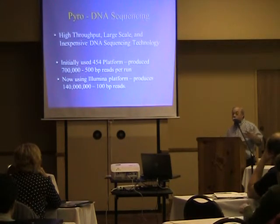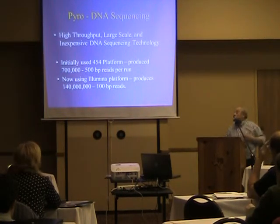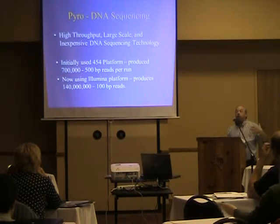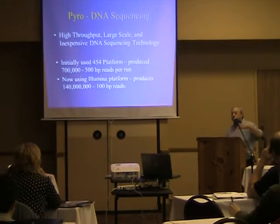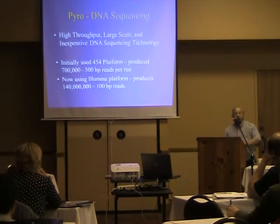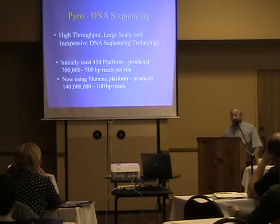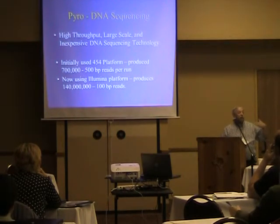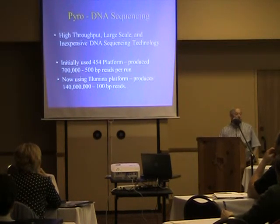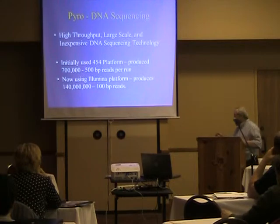We now use the Illumina platform, which produces 170 million reads at 100 base pair length and we can run 80 samples for $3,000 — a dramatic price drop. The 454 was called next-generation sequencing; the Illumina platform doing 170 million sequences is also called next-generation. Now even that is obsolete — there's a new generation that sequences faster and more inexpensively. A new machine will do sequencing in a day, producing 5 million sequences for $1,000 — 24 samples for $1,000.